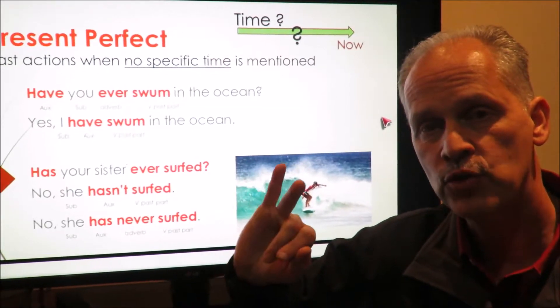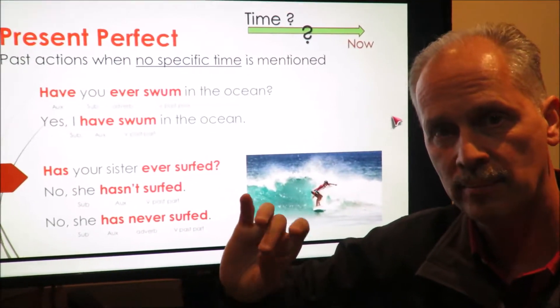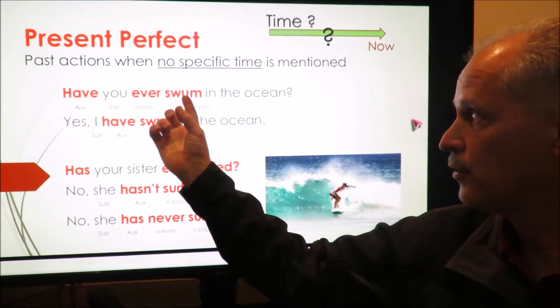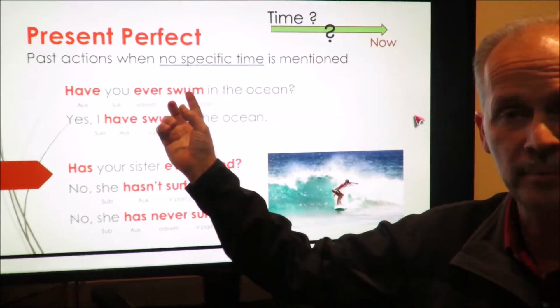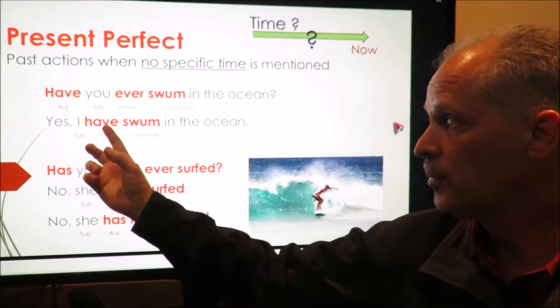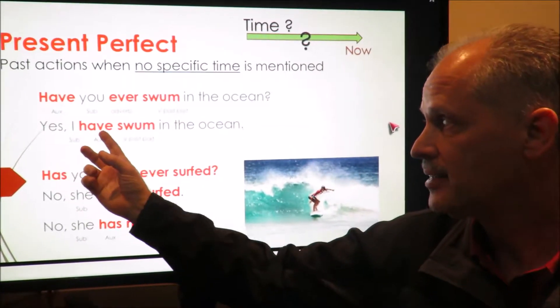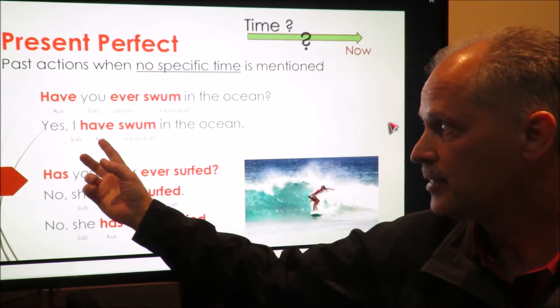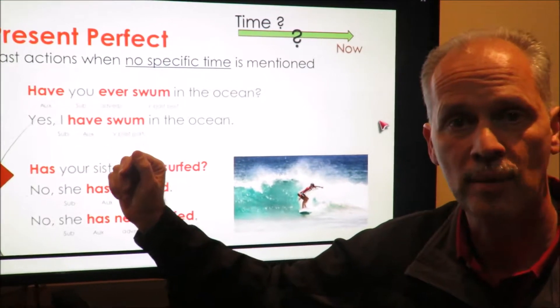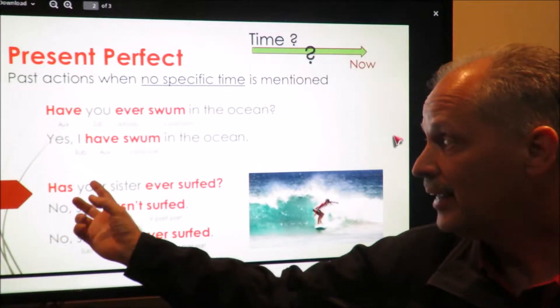We say swim, swam, and swum. We use the third column — the past participle. Now, in the affirmative, we use the auxiliary. 'Yes, I have' is the auxiliary, and 'swum' is the past participle.